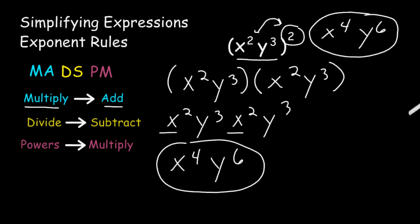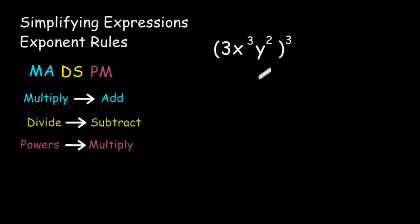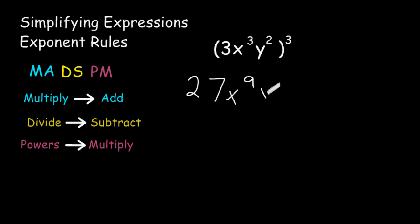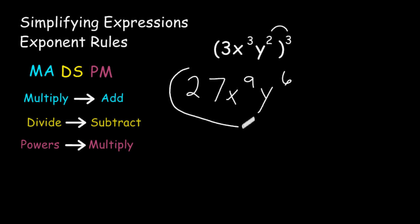Let's try one more example. Notice this time we have a coefficient. The coefficient inside the parentheses also has to be raised to the third power, and 3 to the third power is 27. We write the variable x and multiply the inner exponent by the outer: 3 times 3 is 9. Then we write the variable y and multiply those two exponents, giving a product of 6. So the quantity of 3x to the third power times y to the second power, raised to the third power, equals 27x to the ninth power times y to the sixth power. And that is how you apply exponent rules in different situations.